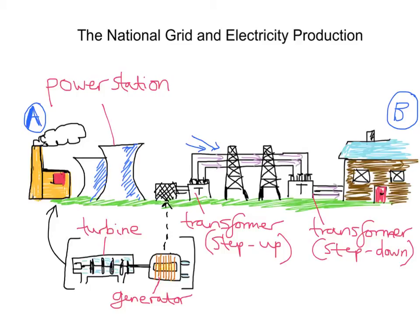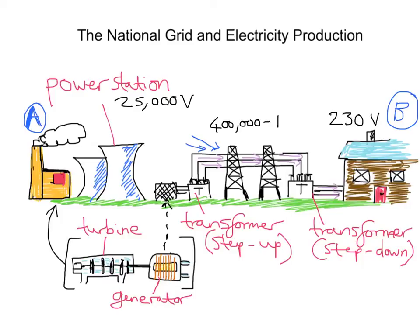The voltage of household electricity is about 230 volts. Power stations produce electricity at 25,000 volts — already a big difference. But electricity is sent through the national grid cables at its peak at 400,000 volts, then 275,000 volts, and even 132,000 volts. We're basically bringing down that voltage as we get closer to where we deliver the electricity — from 4,000 to 132,000 volts through the national grid.